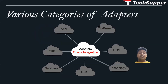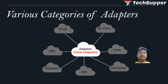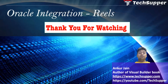Oracle Integration has various categories of adapter. It can be social adapter, HCM adapter, on-premises adapter, database adapter, ERP-related adapters, technology adapters like REST and SOAP, like Oracle Database, Oracle Vision Cloud.